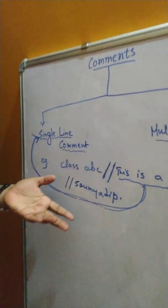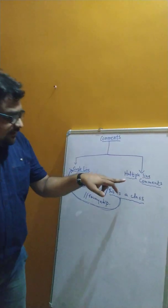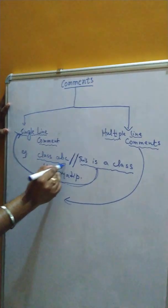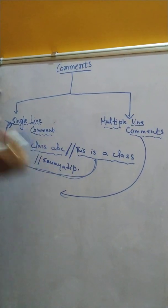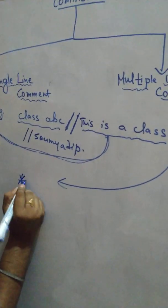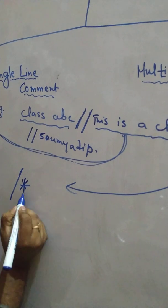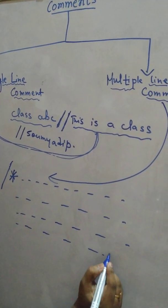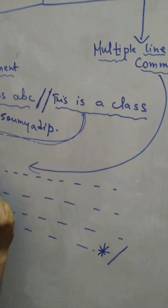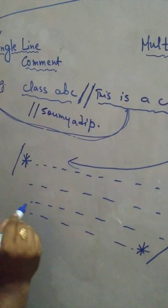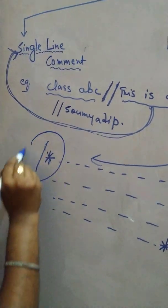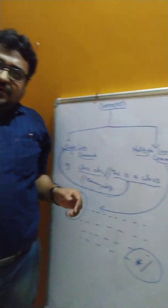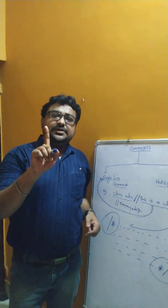Again, I can write one more comment — for example, writing my name 'Adip'. That is also a type of single line comment. Now for multiple line comments, take the same line 'class ABC'. I start with a forward slash followed by an asterisk, then write whatever I want across one, two, three, or four lines, and end with an asterisk followed by a slash. Everything written in between is treated as a comment.